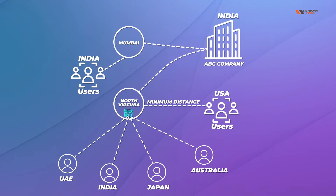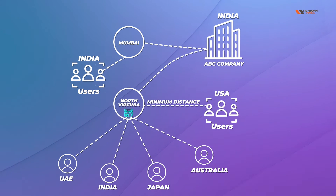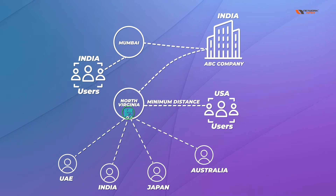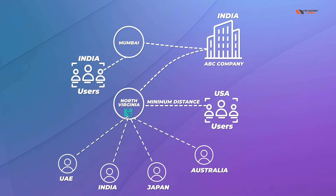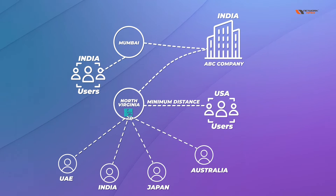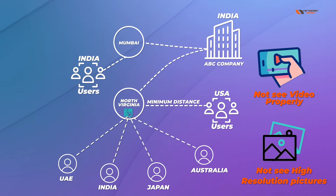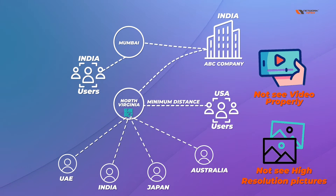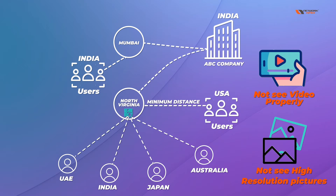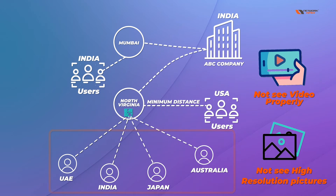There is a big problem here: everyone accessing the application from a remote location is managing their link directly with the server, meaning the server is bearing the full load. They start complaining about latency. For example, the person in Australia — which is really far from North Virginia — will say: I'm not able to see videos properly, high-resolution pictures are loading slowly. You're getting the same complaints from different areas around the world because you're offering direct connectivity from your server.